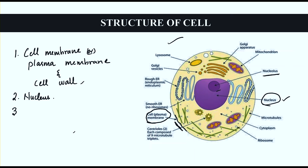The third region is the cytoplasm, which is a jelly-like liquid substance present inside the cell. In the cytoplasm, all the organelles are present, including Golgi apparatus, mitochondria, microtubules, ribosomes, endoplasmic reticulum (two types), and lysosomes.